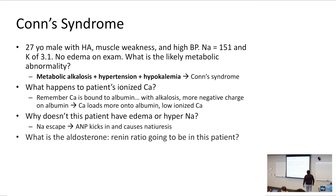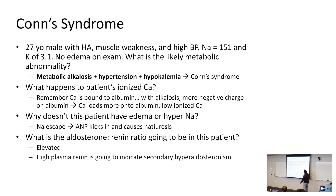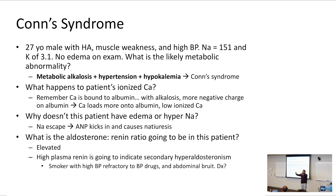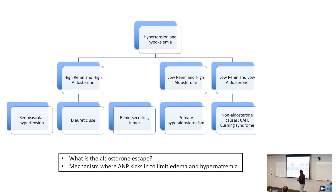What is the aldosterone-to-renin ratio in Conn syndrome? Because you have increased amounts of aldosterone, the numerator goes up and renin as a feedback goes down — so your aldosterone-to-renin ratio is going to be elevated. High plasma renin indicates secondary hyperaldosteronism, such as in renal artery stenosis. Make sure you know the aldosterone escape where ANP kicks in and causes diuresis of the extra fluid, so you're not going to have too much edema in hyperaldosteronism.